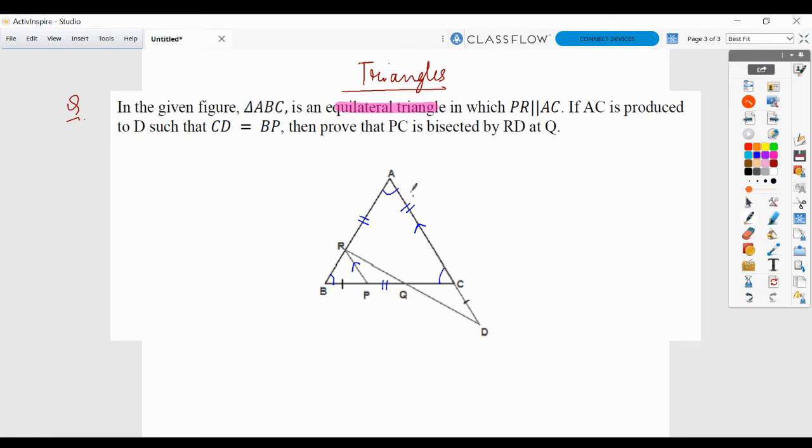If AC is produced to D such that CD is equal to BP, then prove that PC is bisected by RD at point Q.